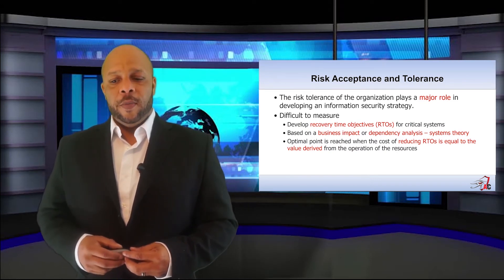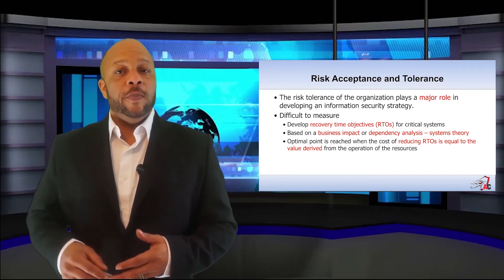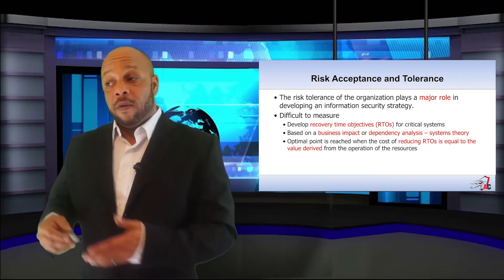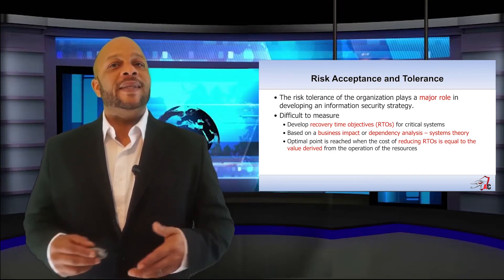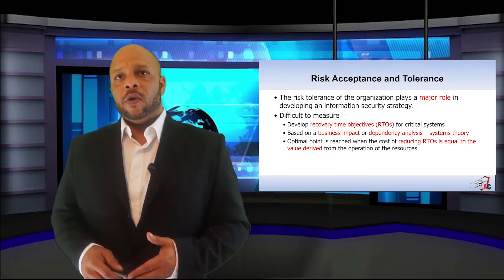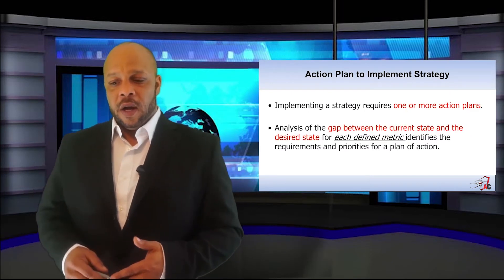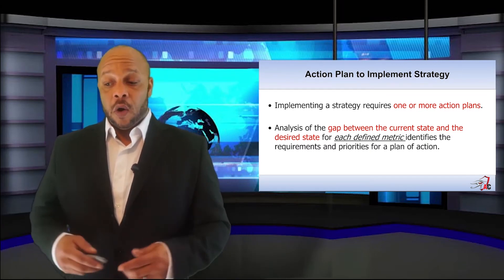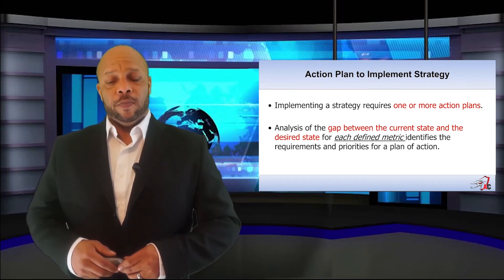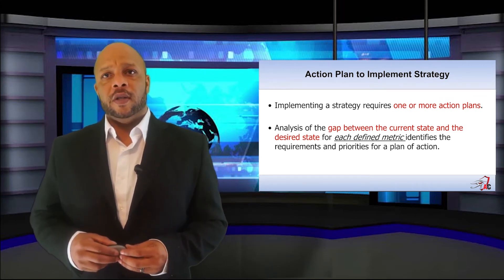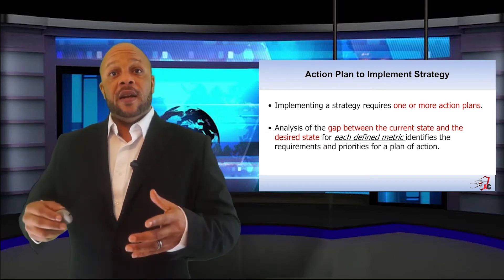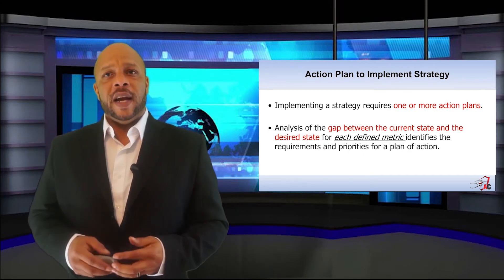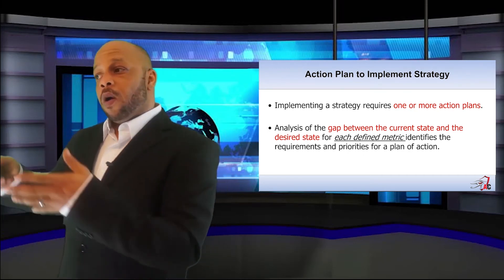All these things are necessary to identify our RTO. The goal is to reduce the RTO to a point where it equals the value derived from the operation of the resources — in other words, stay in business. No plan or strategy is complete without a plan of action, sometimes called a plan of action and milestones. The implementation of our strategy will require multiple action plans. Typically, most departments within an organization will have to create their own plan and feed it into the master plan. These action plans help us develop the understanding between our current state and our desired state.